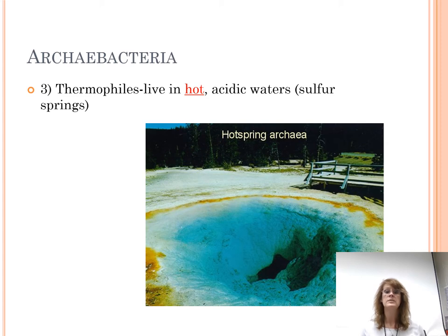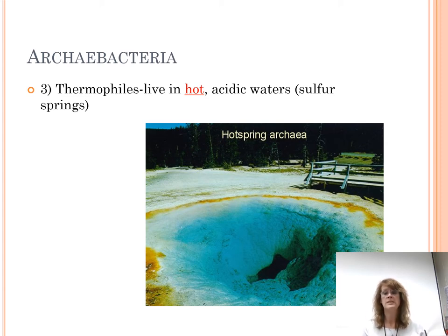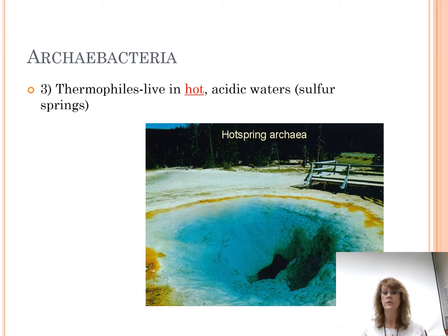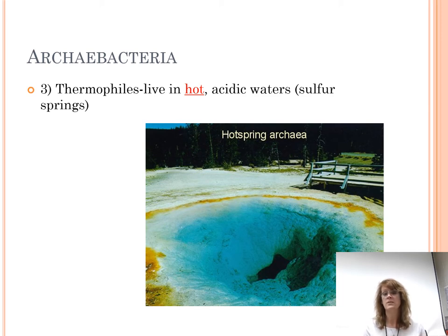Thermophiles live in really hot water. This picture is taken at Mammoth Hot Springs in Yellowstone National Park, where the crust is very thin. There are areas you can't walk on because if you fall through, you end up in boiling water — there have been cases of people falling through. You can see the yellowish color around the vents — that's sulfur. If you go to Mammoth Hot Springs, it smells like rotten eggs. This bacteria lives in that hot water and can do chemosynthesis — making sugar using chemicals like sulfur.